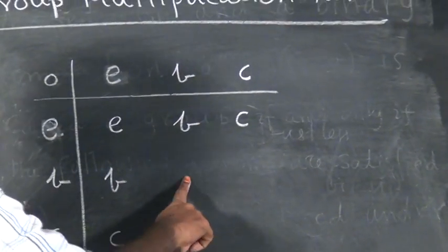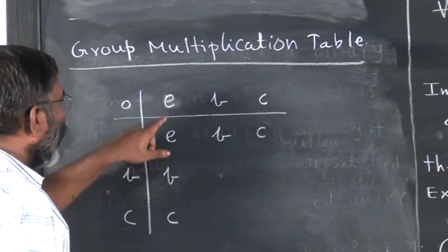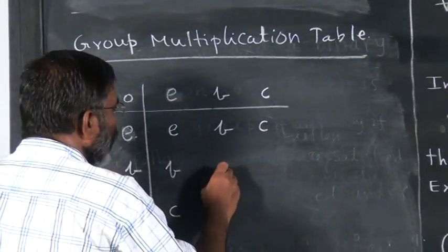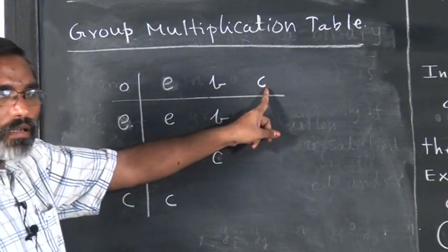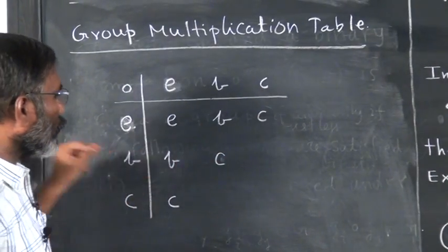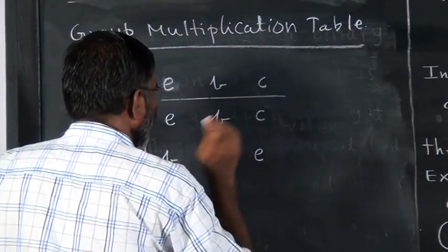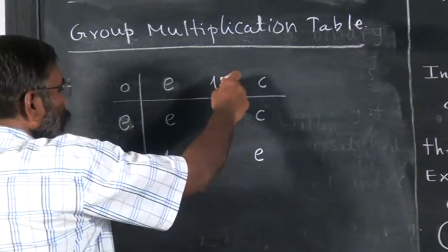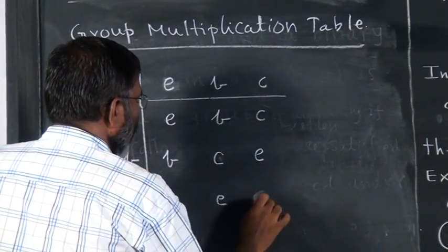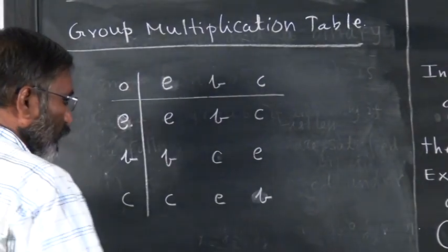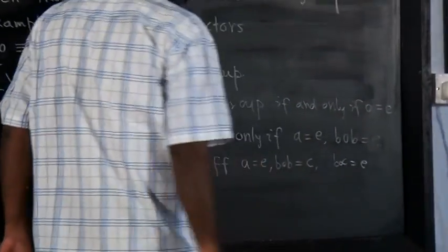Now we must write B into B. B into B cannot be identity, otherwise B itself would be identity. So we have only three elements. If B into B equals C, then B into C has to be identity. So B into C is identity, and similarly C into B is also identity. C into C is B. Only under this condition — A is identity, B∘C equals identity — does this work.